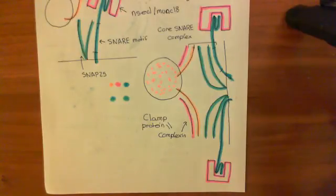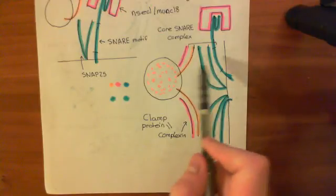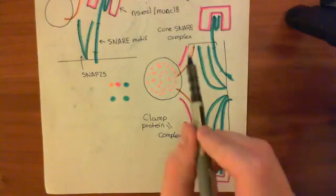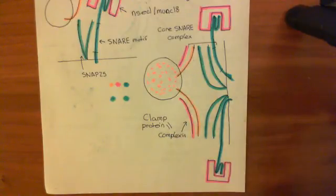So overall, this now is the machinery which docks this synaptic vesicle at the presynaptic membrane. So you have these three SNARE proteins together with the NSEC1 slash MUNC18 and the complexin, which is preventing the core SNARE complex from actually fusing the two membranes together. And in the next video, what we'll start to look at is how when an action potential arises, it actually triggers the fusion of this synaptic vesicle with the presynaptic membrane.